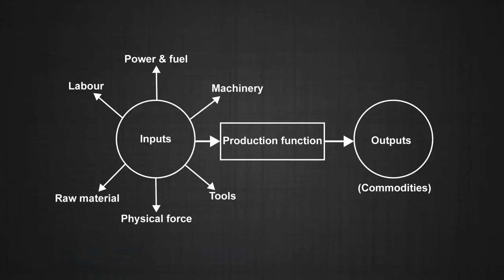Third, the relationship between output produced and inputs used in the production process depends on the economic time period under study. The variability of inputs depends on time. Some inputs cannot be changed in the short run — that is, some inputs are fixed — and hence output can only be changed by changing the units of other inputs, which are the variable inputs. Changes in the total output by changing all inputs are possible only in the long run.